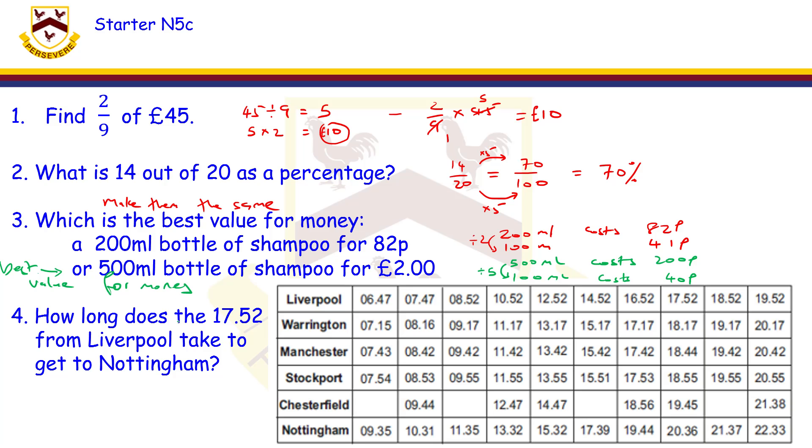Always remember you have to state that it's the best value for money. It's not enough just to put the answer there, 41p and 40p. You have to state which one is the best value for money.